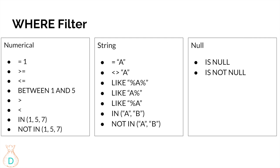Using LIKE 'A%' with a percentage sign only in the back filters to strings that START with the letter 'A'. If you know the exact string you're looking for, always use an equal sign instead of LIKE, because LIKE takes a lot more resources — it has to scan every single string to check for a match.